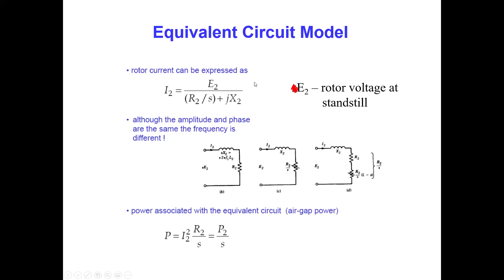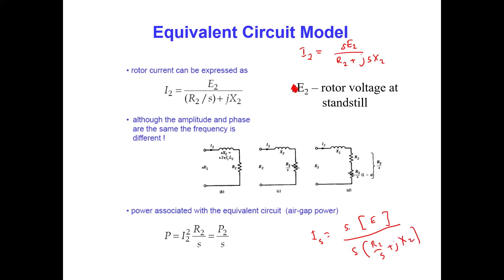Previously, the rotor current equation was I2 = sE2 / (R2 + j·s·X2). When we factor out s, this becomes I2 = E2 / (R2/s + j·X2). This allows us to redraw the rotor circuit with E2, X2, and R2/s — transforming the original circuit into an equivalent form where s is absorbed into the resistance term.